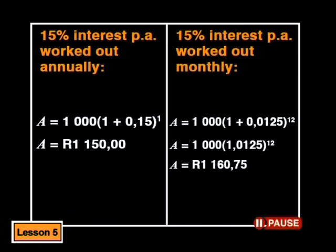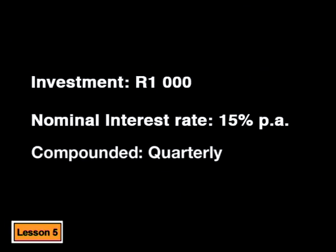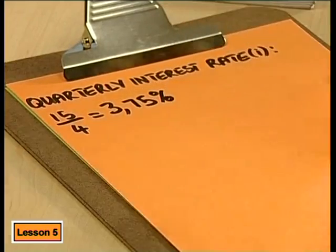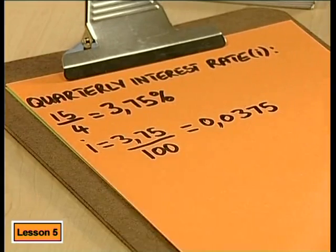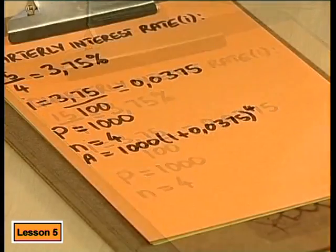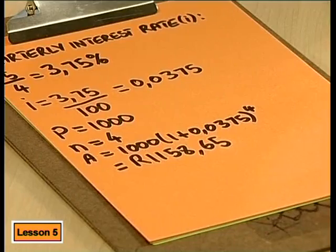The more often you calculate interest in a year, the more money you end up with — the smaller your compounding interval, the more interest you earn. Let's test this idea. How much will you earn if the interest is compounded quarterly? Quarterly means dividing the year into four, so interest is calculated at the end of every three months. We divide 15 by 4 to get the quarterly rate of 3.75%, so I equals 0.0375. P is 1,000 and N is 4. Substituting gives 1,158.65.